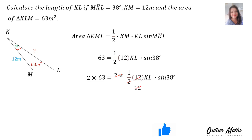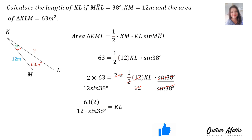I also divide by 12 there. I'm looking for KL, so what's still in the way is sin 38. Therefore divide away sin 38 on the right and divide by sin 38 on the left. Now it looks like this: 63 times 2 over 12 times sin 38 degrees equals KL. You slot that into your calculator in one go, and the final answer: KL's length is 17.1 meters.